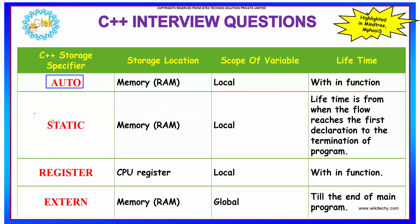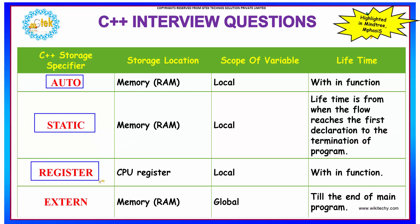Static is stored in RAM and the scope of the variable is local. The lifetime is from when the program flow reaches the first declaration of the static variable, all the way to the termination of the program. So until the program terminates, the static values will remain the same.